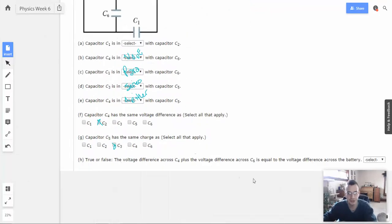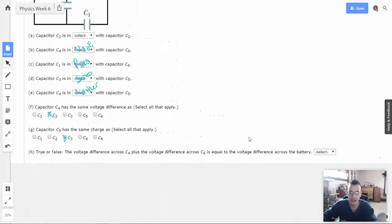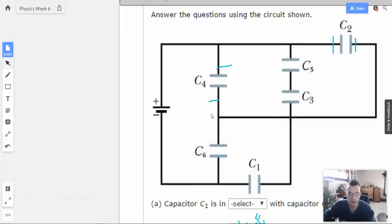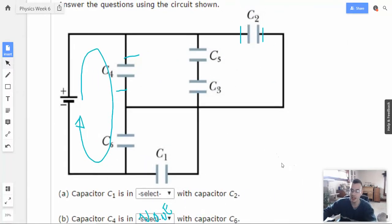True or false? The voltage difference across C4 plus the voltage difference across C6 is equal to the voltage difference across the battery. This is basically saying Kirchhoff's voltage law. If you do Kirchhoff's voltage law, which states that the potential around any closed loop has to equal zero. The idea is electrons are going to flow from high potential to low potential. If you look at the battery here, as you go through, it's going to create a higher potential, because that's what batteries do. They create a potential difference.